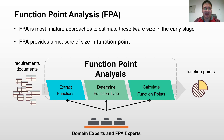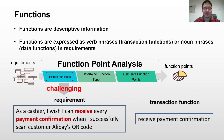In FPA, given a requirement, the functions are manually extracted. Then the expert will determine the function type and calculate the function point based on the extracted functions. Specifically, the most challenging activity is extracting functions.